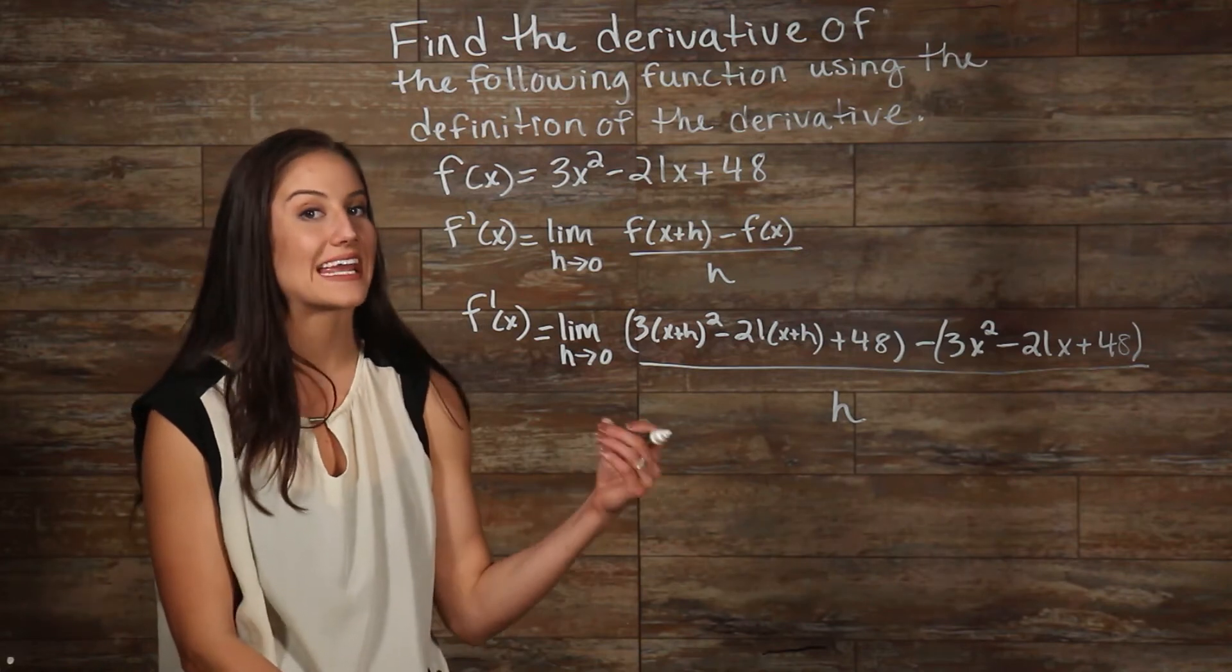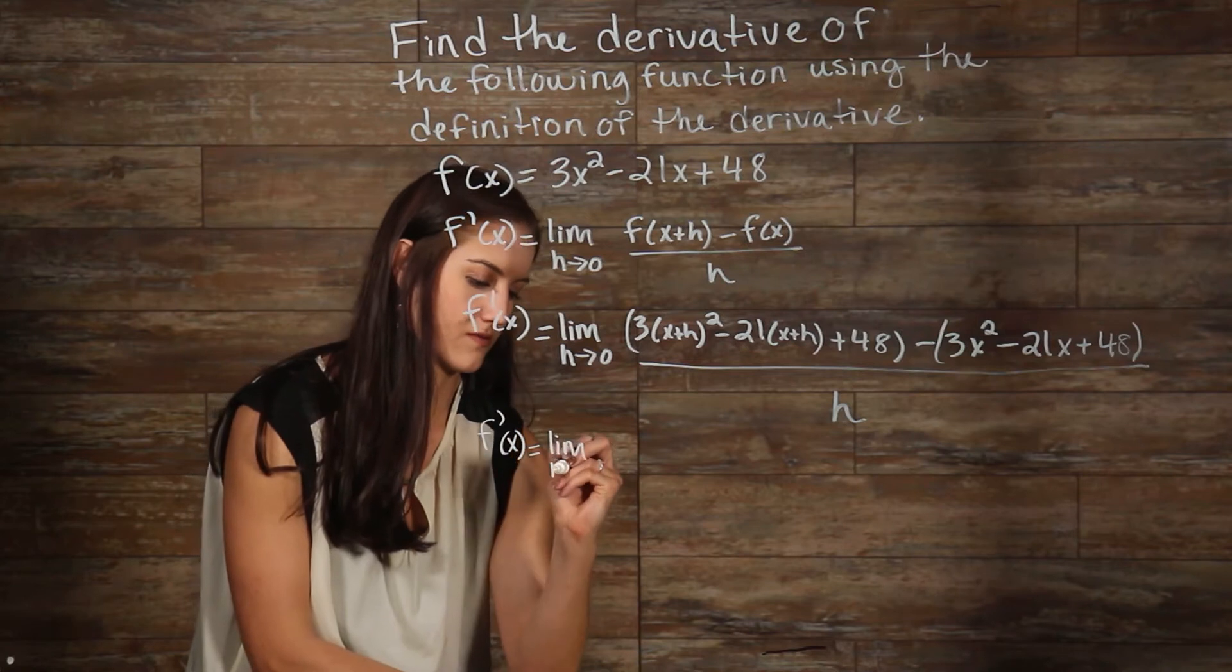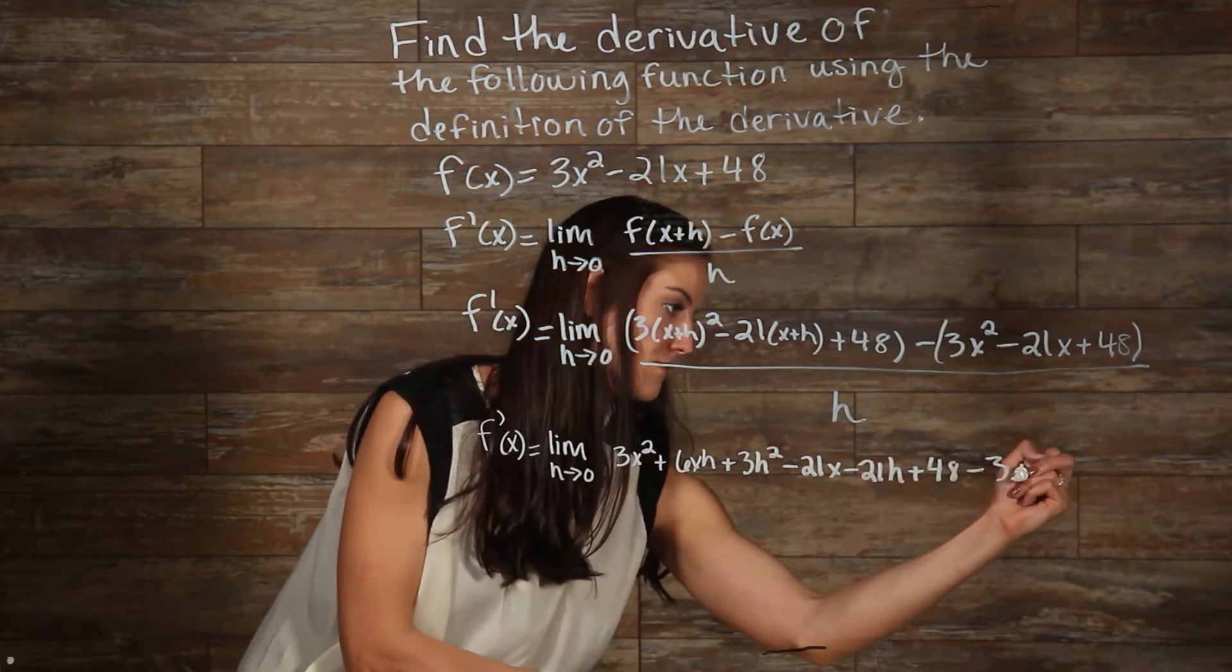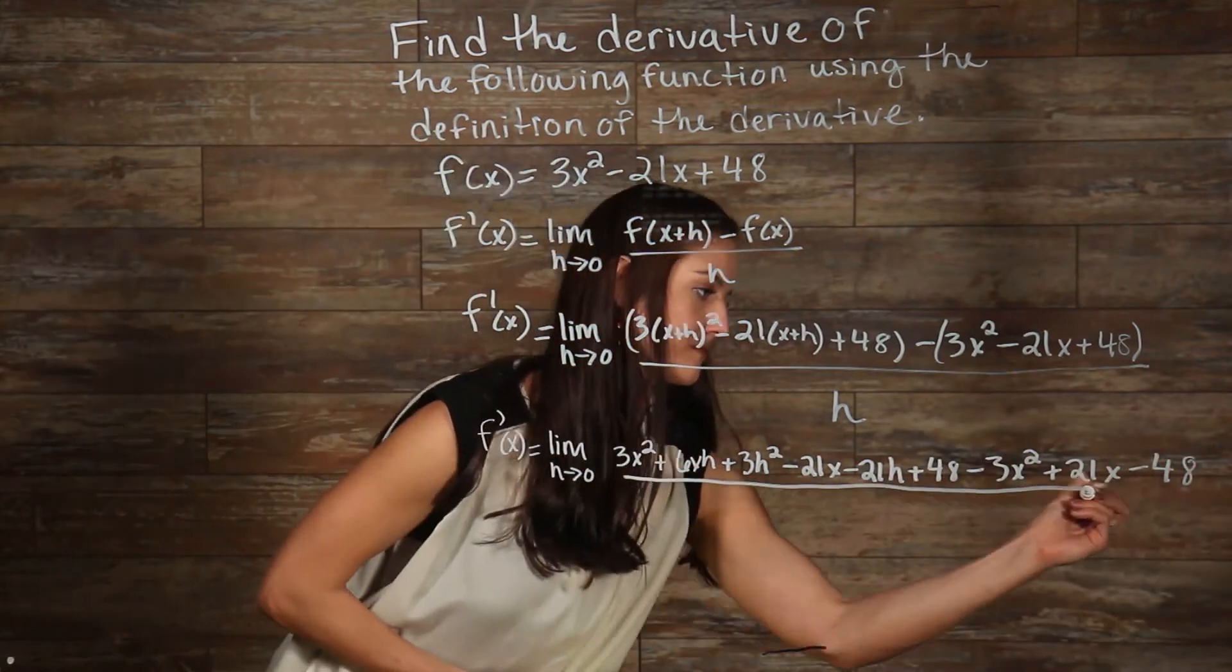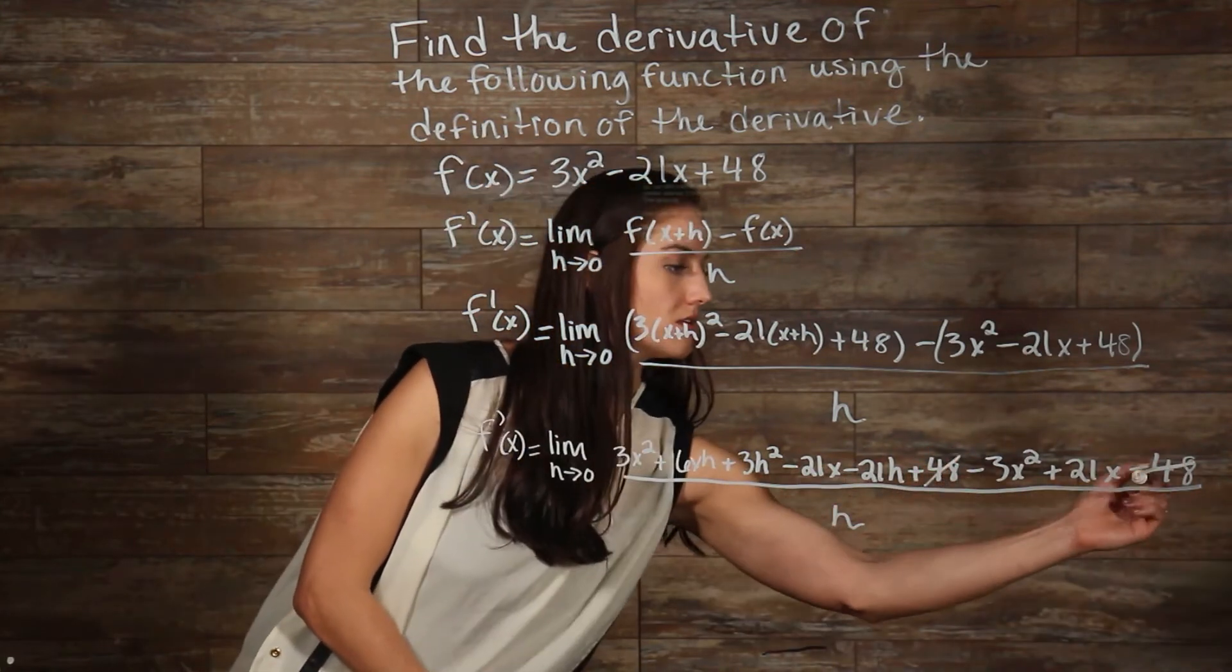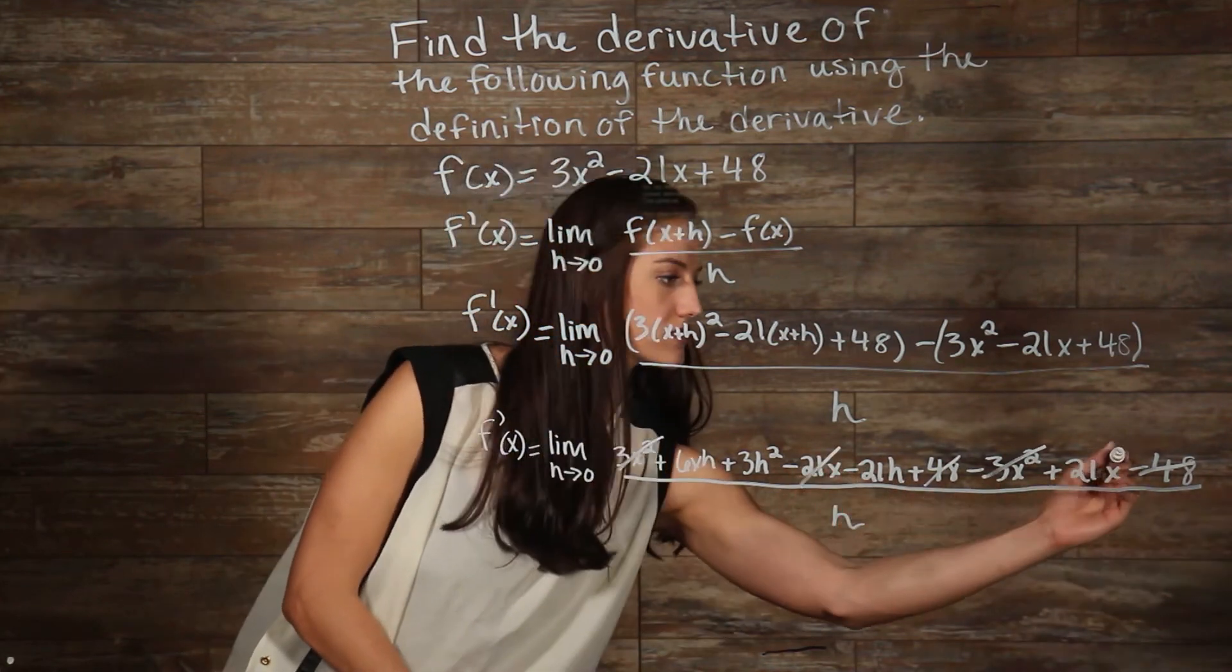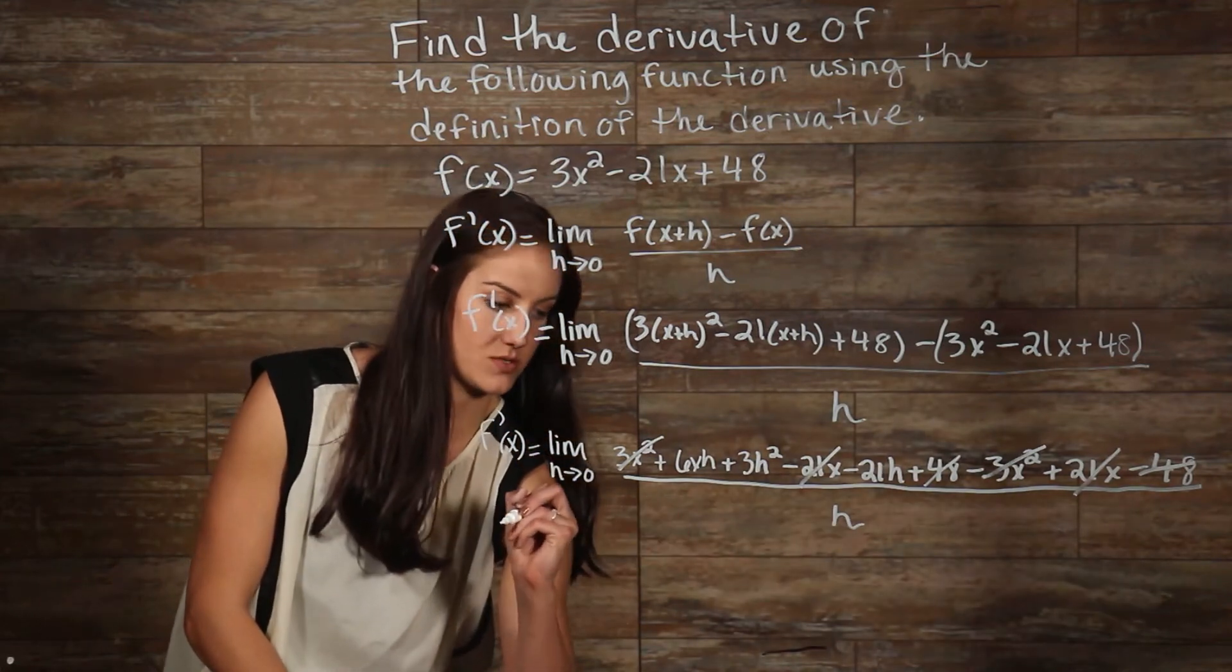Now, we can multiply all of this out, then cancel our like terms. We can see that our 48s are going to cancel, our 3x squareds are going to cancel, and our 21x's will cancel. This is going to give us everything that's left.